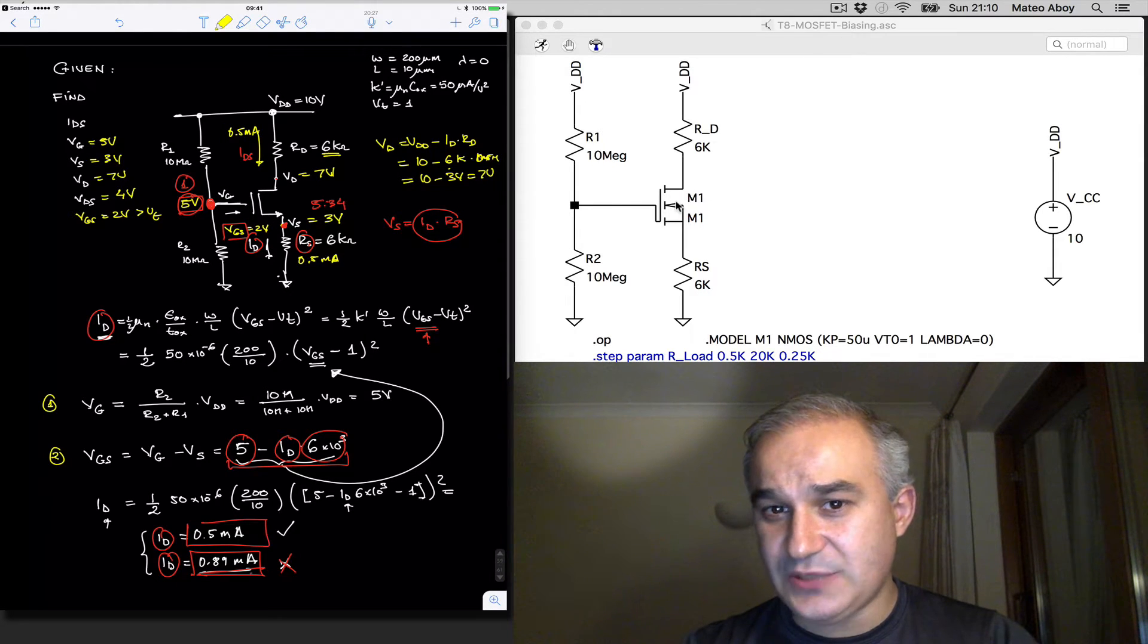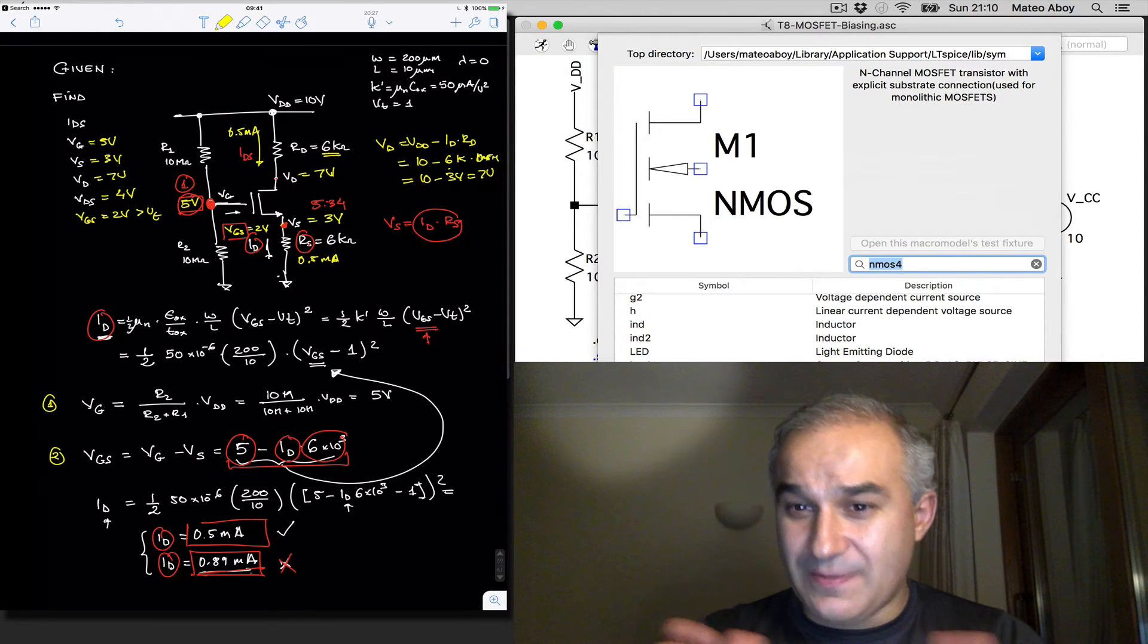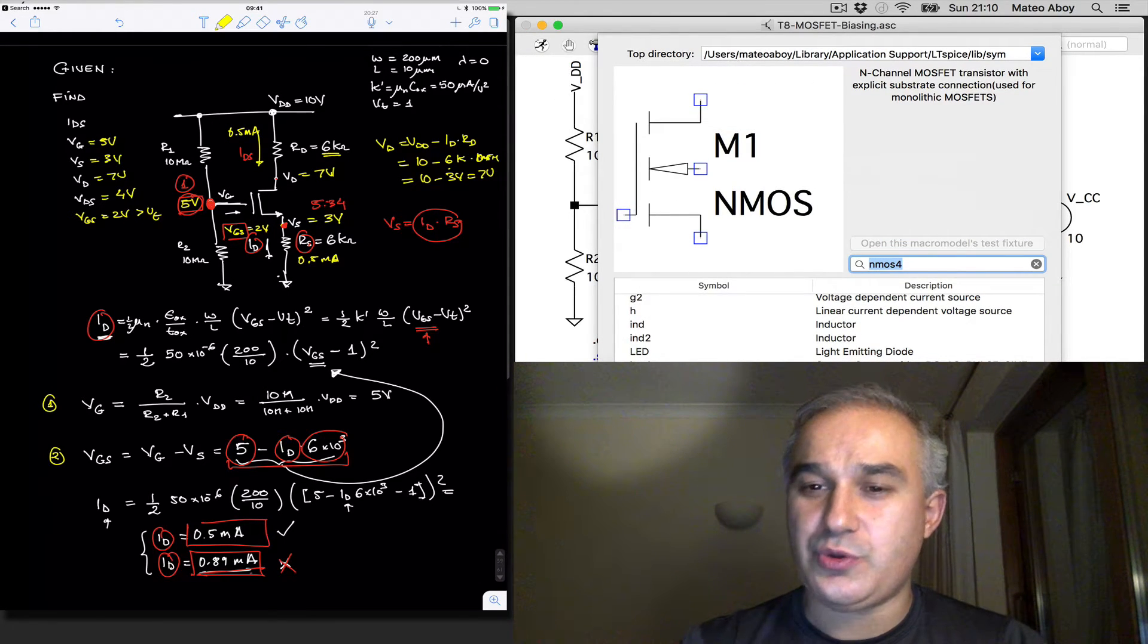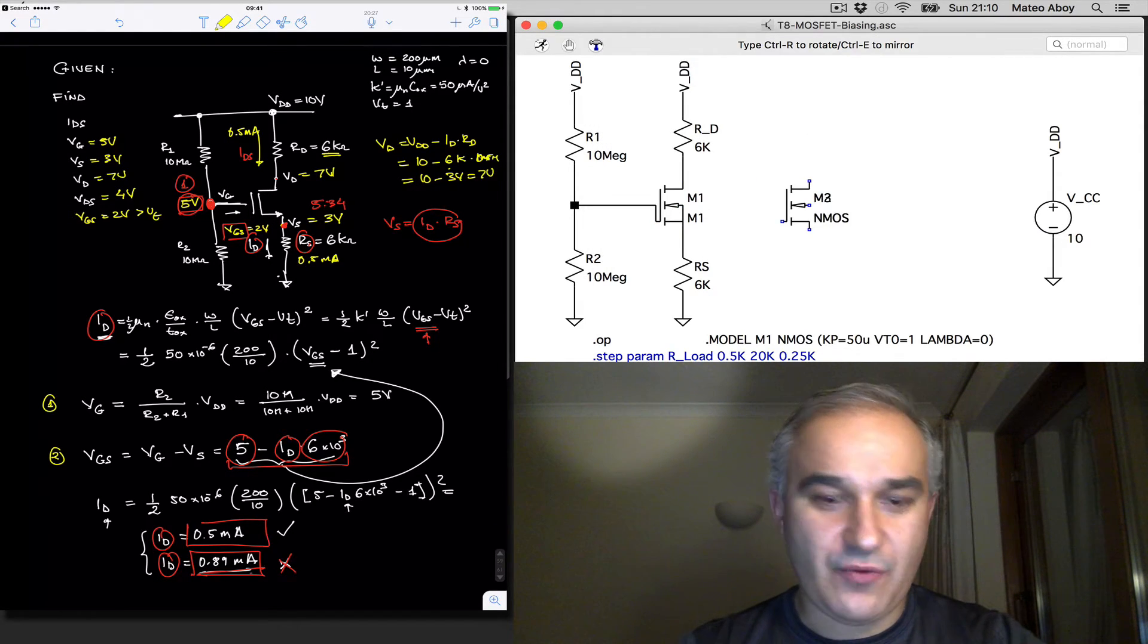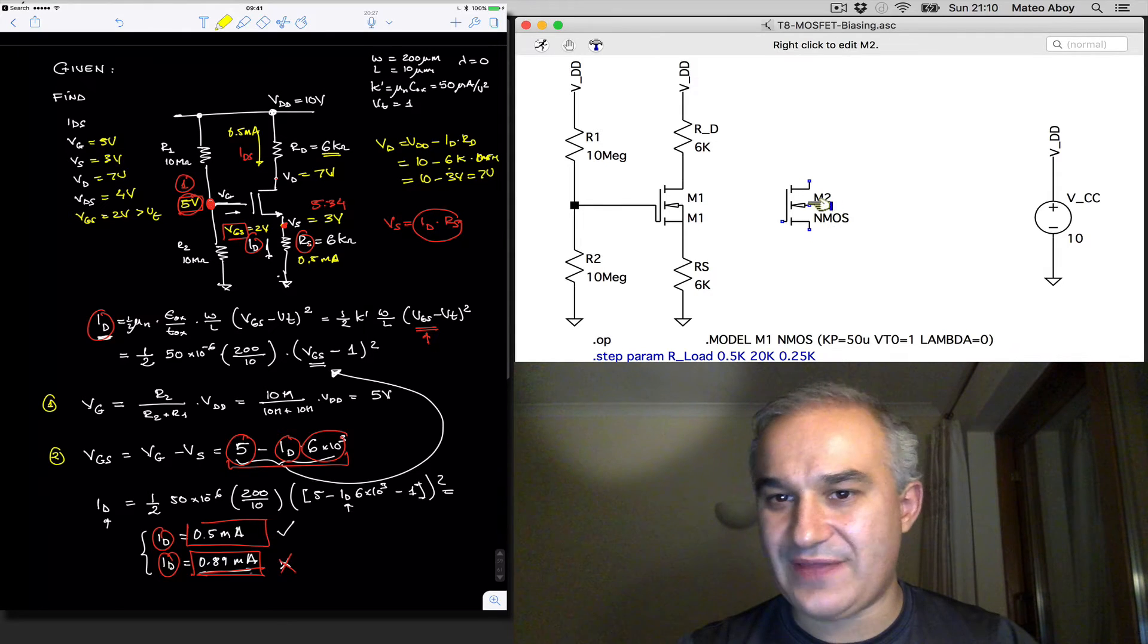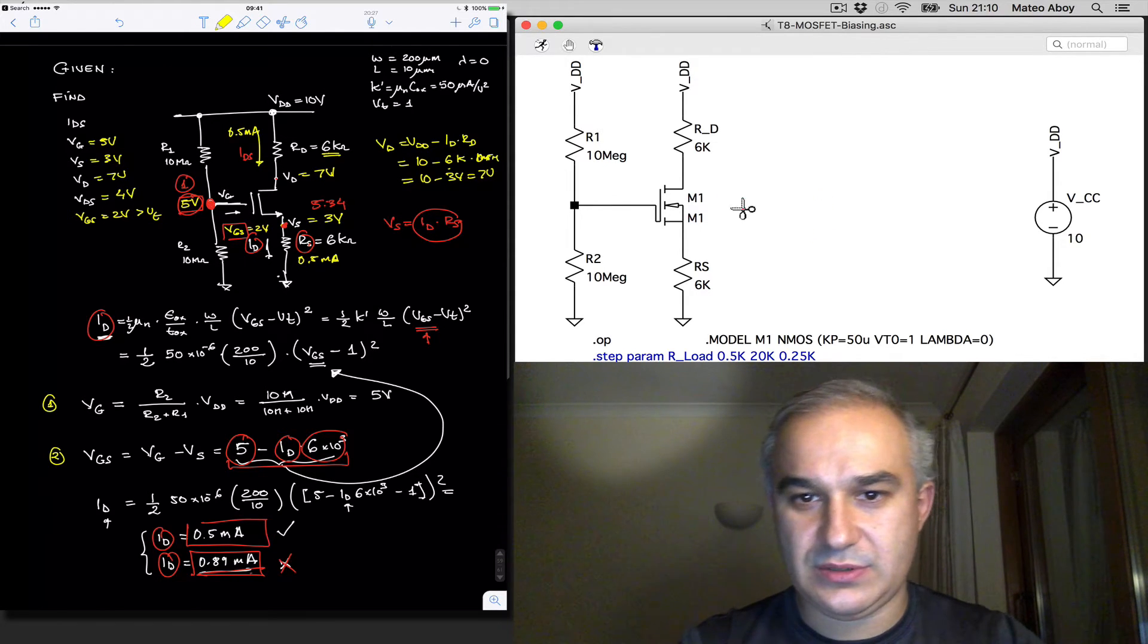To do the analysis in LTSpice, we need to choose the transistor and the model that we are going to use. We are going to use the NMOS4, and then remember that you do need to connect the substrate to the source, here, as I did there.